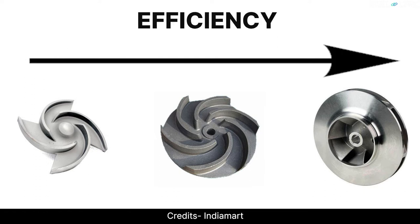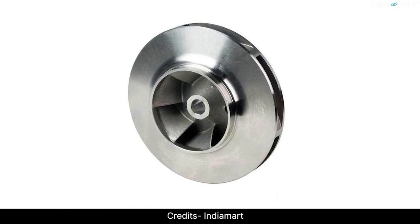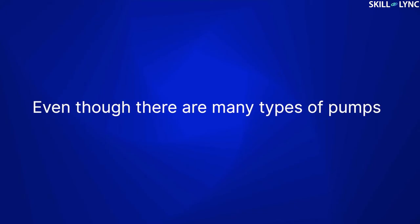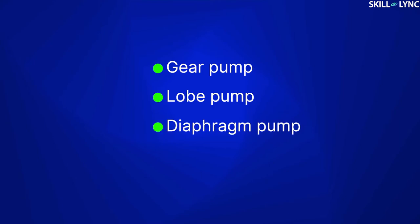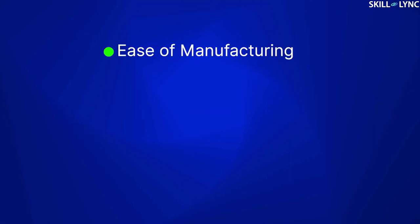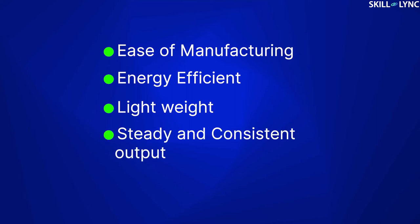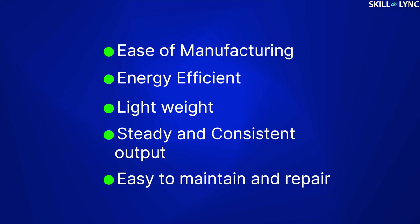However, open type impellers are inefficient when compared to closed type impellers. Majority of domestic motors use a centrifugal pump with a closed type impeller. Even though there are many types of pumps like gear pump, lobe pump, diaphragm pump, screw pump, etc., the centrifugal pump is the most commonly used. The main reason is ease of manufacturing. These pumps are also energy efficient and lightweight, with steady and consistent output. They are also very easy to maintain and repair.